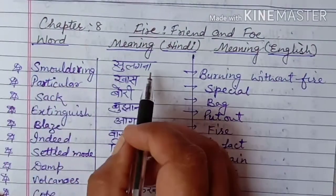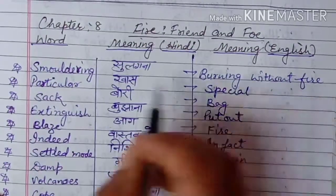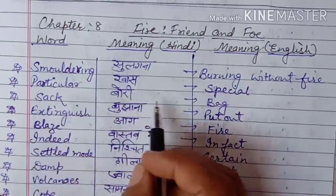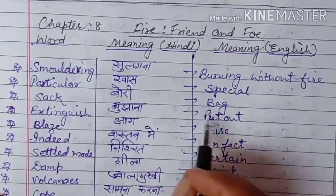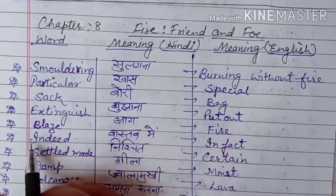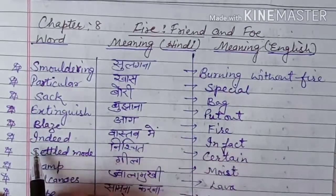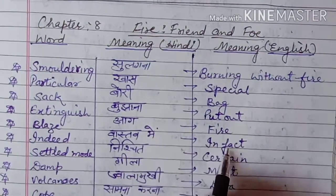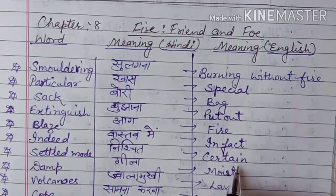Smoldering: sulgna, burning without fire. Particular: khas, special. Sack: bori, bag. Extinguish: bujana, put out. Blaze: aag, fire. Indeed: vasto mein, in fact. Settled mood: nishit, certain.